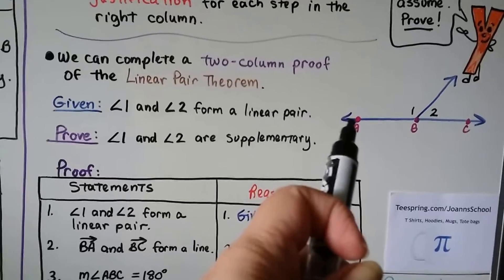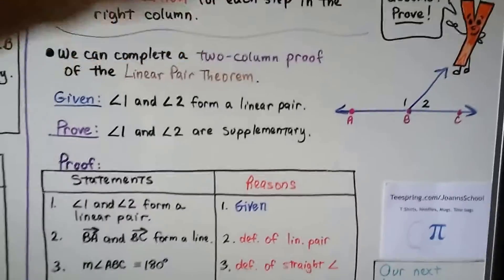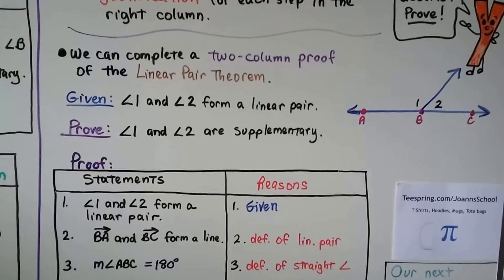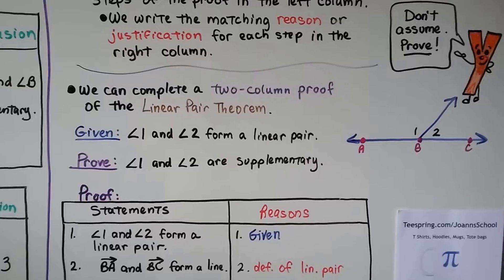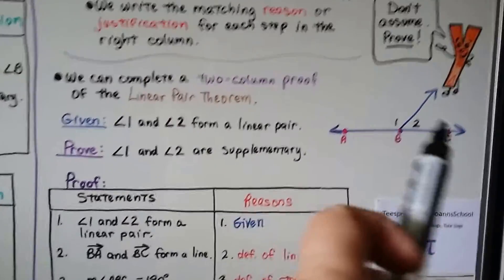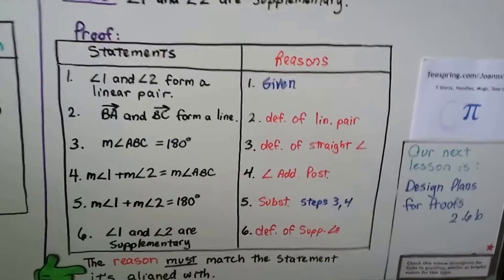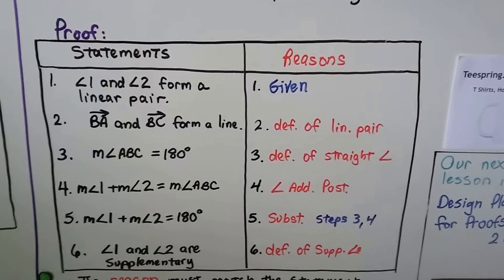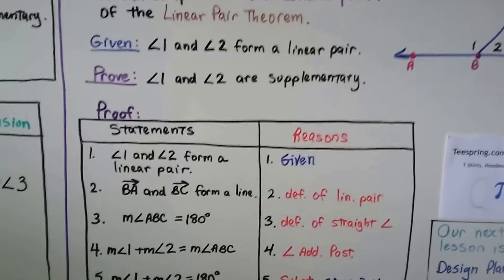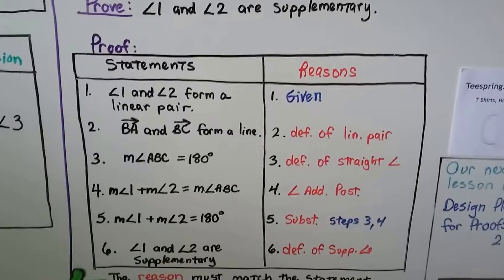Here, if you notice this drawing, we've got points A, B, and C. This makes a straight angle — B would be the vertex. But we've also got angle 1 and angle 2. So we can complete a two-column proof of the Linear Pair Theorem. The linear pair theorem says if two angles form a linear pair, then they are supplementary. Our given is angle 1 and angle 2 form a linear pair — they make 180 degrees together. We need to prove that angle 1 and angle 2 are supplementary. Here is our two-column proof with statements on the left and reasons on the right. Our first statement is angle 1 and angle 2 form a linear pair — from our given. A lot of times the first statement is the given.